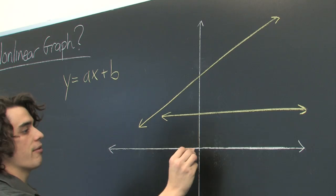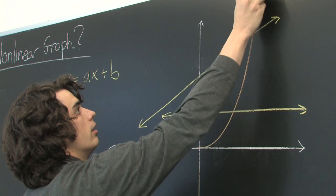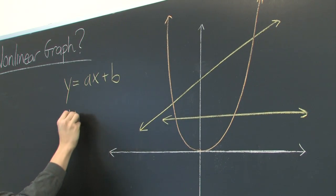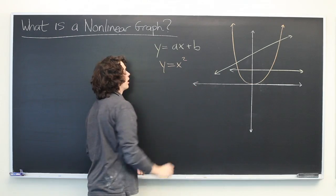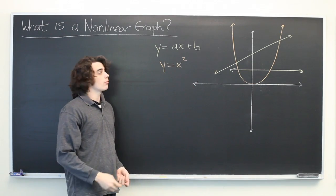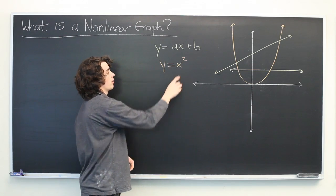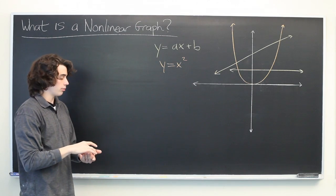For example, we have our familiar parabola given by y equals x squared. That's nonlinear. It is a polynomial, but because we have a term of a degree higher than one, it is a nonlinear polynomial.